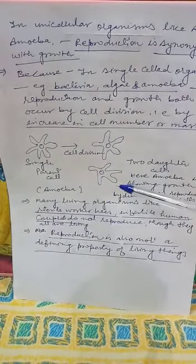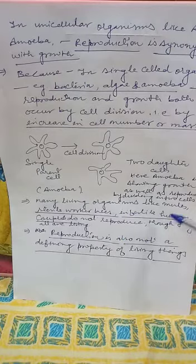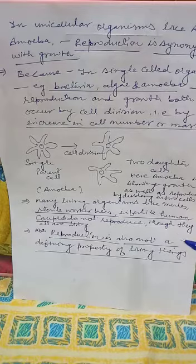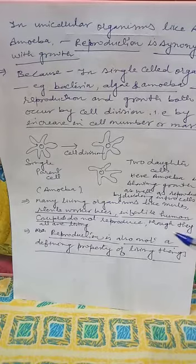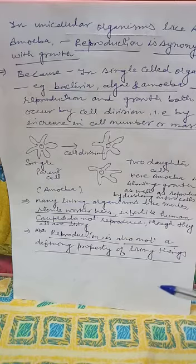Besides this, many living organisms like mules, sterile worker bees, and infertile human couples do not reproduce, though they are all living. That's why we can say reproduction is not a defining property of living things. Thank you.